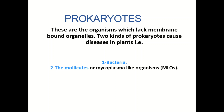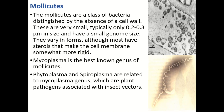Number one is bacteria. Number two is the mollicutes, or mycoplasma-like organisms, which are also known as MLOs. The mollicutes are a class of bacteria which are described by the absence of cell wall. Most of the bacteria have cell wall, but the mollicutes do not have cell wall.